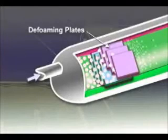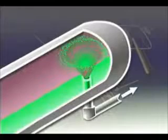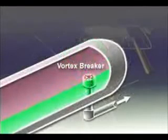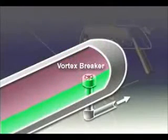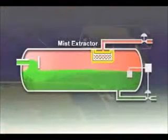Foaming tends to occur when gas bubbles are liberated from the liquid. A vortex breaker keeps vortexes from developing when the liquid control valve is open, thus preventing gas from being drawn out of the vapor space and re-entrained in the liquid outlet. Mist extractors coalesce and collect small liquid drops from separated gas before the gas leaves the vessel.